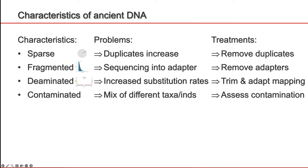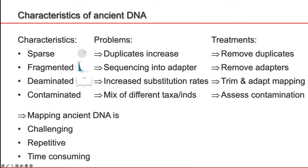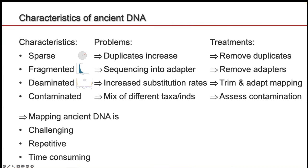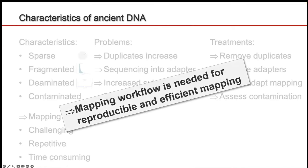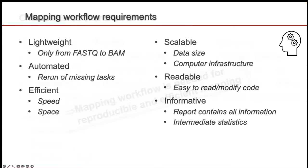This mixture of different taxa or of different humans is problematic. We can assess the contamination, and if it's too high, we have to exclude the sample and focus on better samples. Mapping ancient DNA is challenging — it is repetitive since you resequence the same sample to increase coverage, and it's time-consuming. So it's really important to have a mapping workflow which is reproducible and efficient.